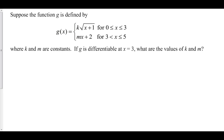Suppose the function g is defined by the following piecewise function, where from 0 to 3 it is defined as k times the square root of x plus 1, and from 3 to 5 it is defined as mx plus 2, where k and m are constants. If g is differentiable at x equals 3, what are the values of k and m?